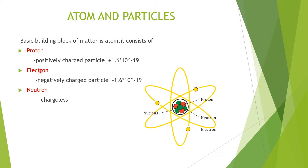The next component is the electron. It is a negatively charged particle and its charge is minus 1.6 × 10⁻¹⁹ Coulombs. The last component is the neutron — it is a chargeless particle. The nucleus consists of neutrons and protons.